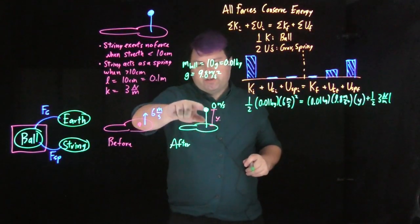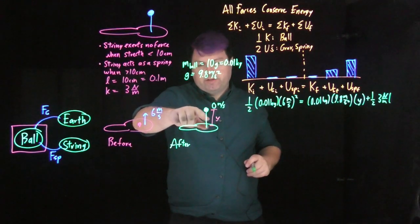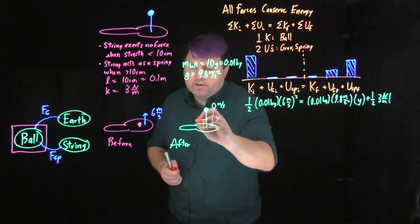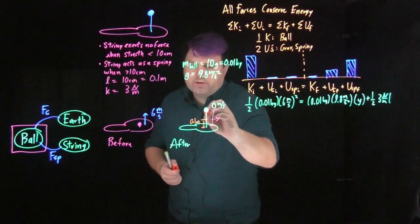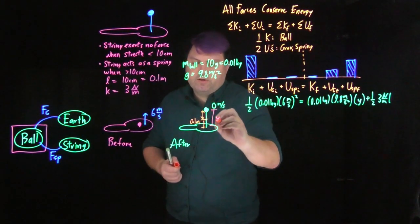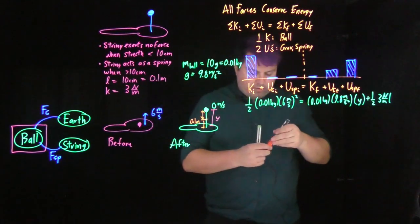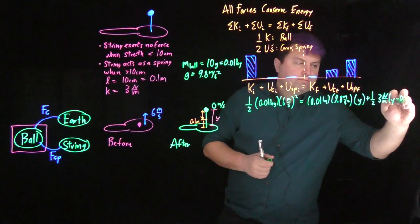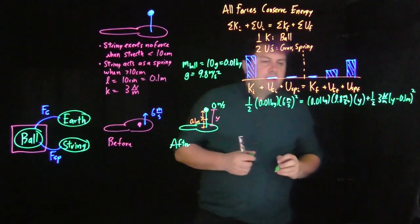Then we have our spring potential force one-half times 3 newtons per meter times, how much has this stretched? It only starts stretching once it gets to its natural length of 0.1 meters. So this stretch is going to be y minus 0.1, and then we square that.